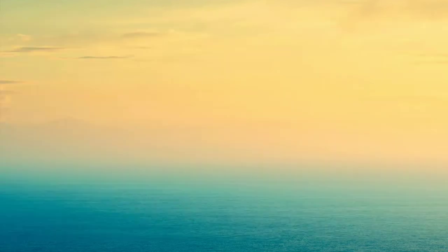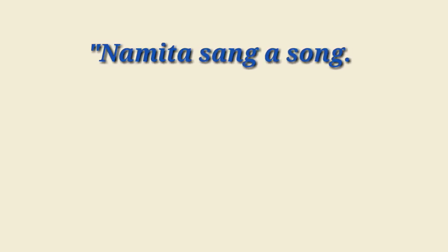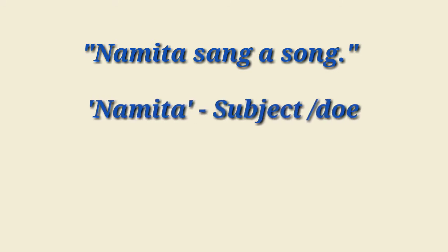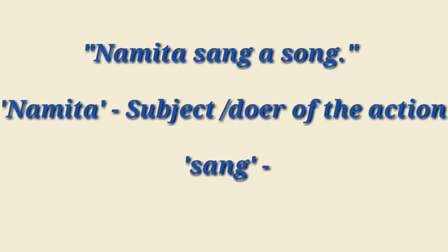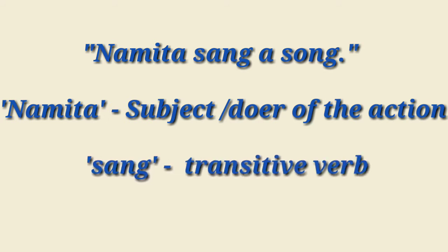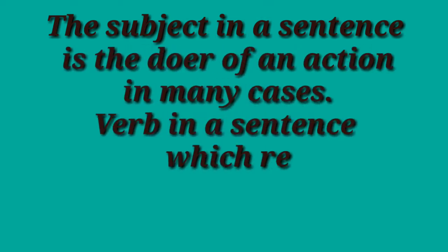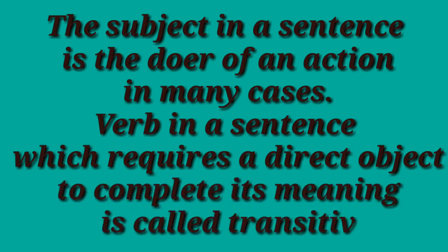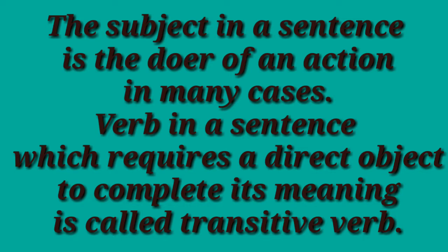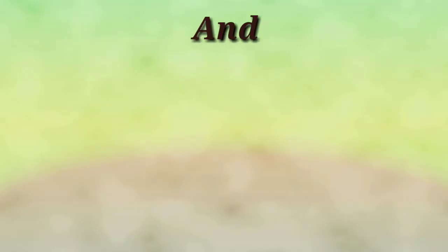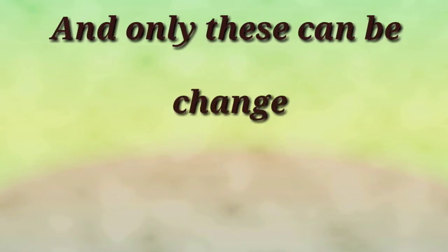Now let us see in detail. Look at this sentence: 'Namita sang a song.' In this sentence, Namita is the subject or doer of the action. The verb is 'sang' and 'song' is the object. Therefore, the verb 'sang' is a transitive verb. A verb in a sentence which requires a direct object to complete its meaning is called a transitive verb, and only these can be changed into passive form.